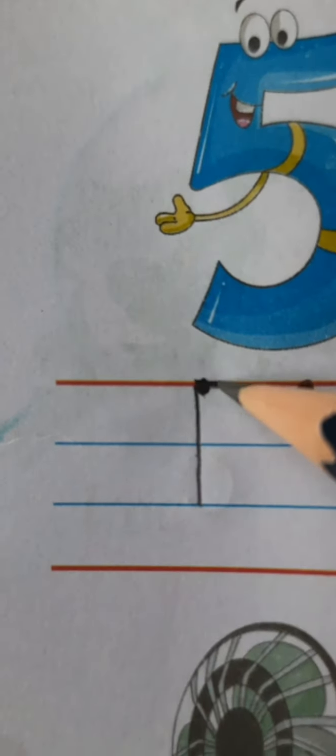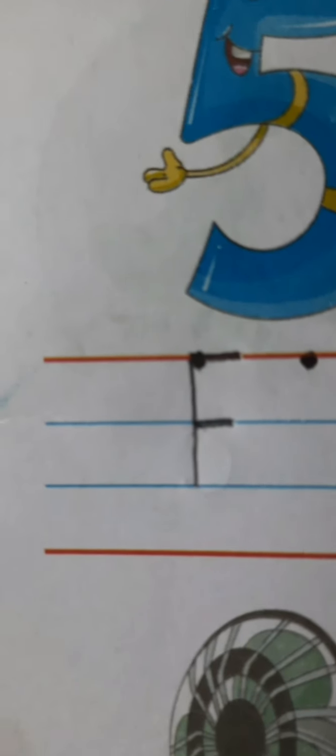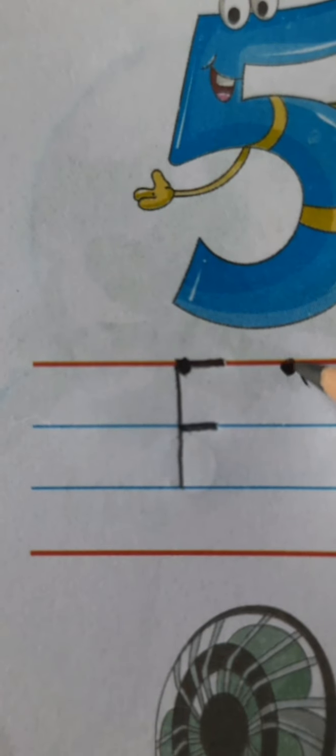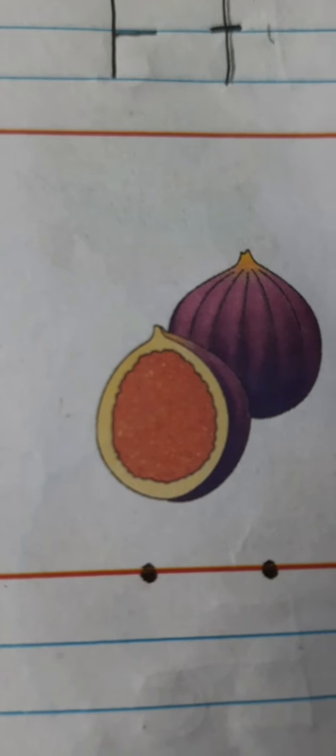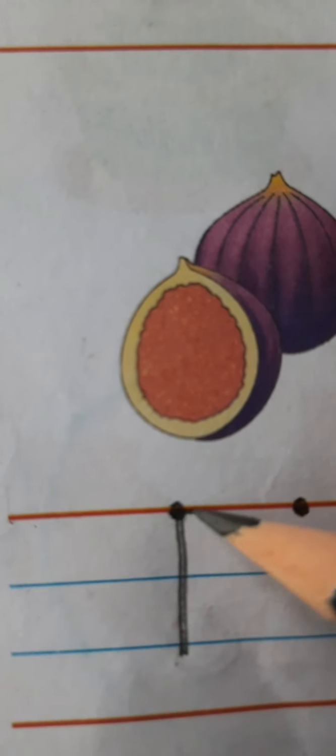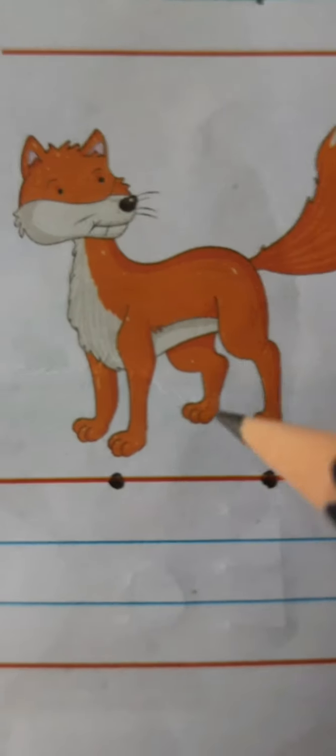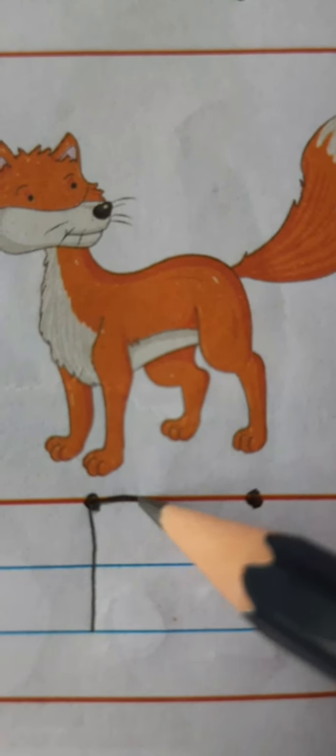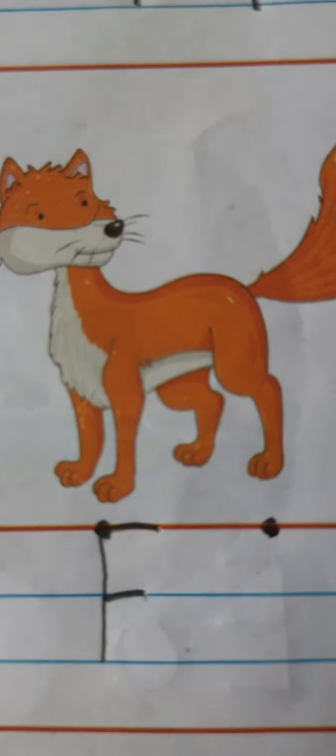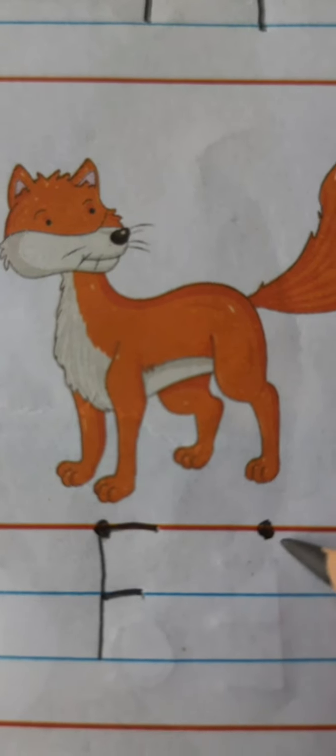F is for fig. Capital F. Standing line and two sleeping lines. And this is small f. F is for fox. Fox. Fox.